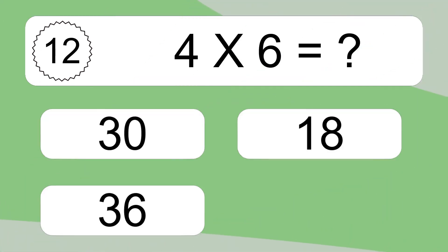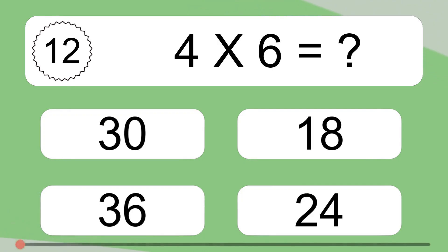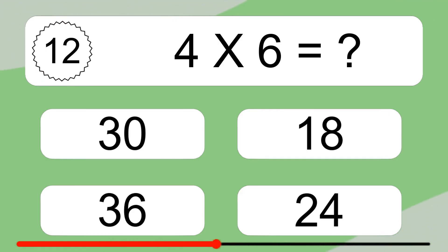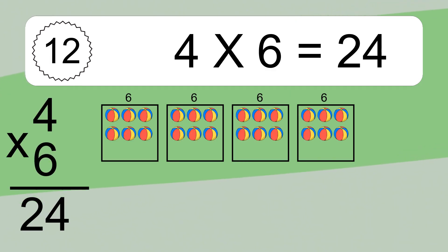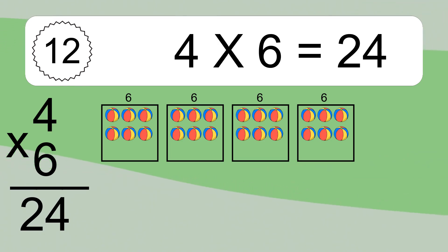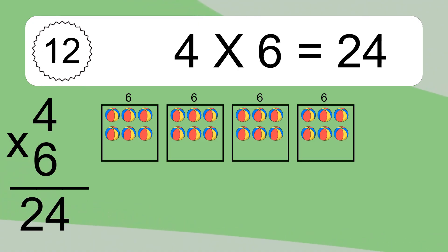4 times 6 equals what? 4 times 6 equals 24. We have 4 boxes, and each box has 6 colorful balls inside. If you count all the balls in all the boxes together, you will have 4 times 6 balls. This equals 24 balls.